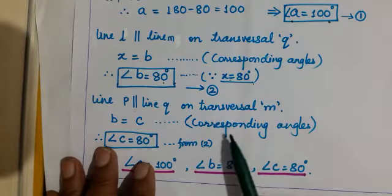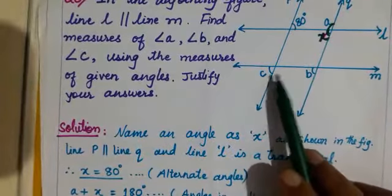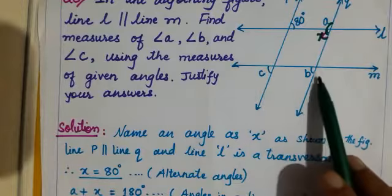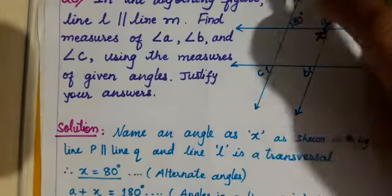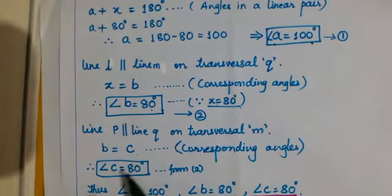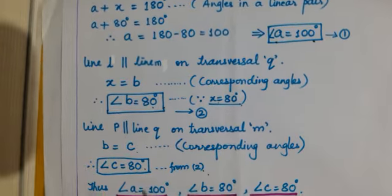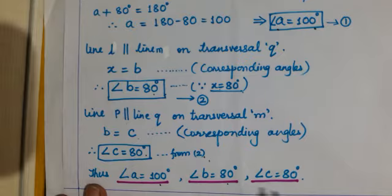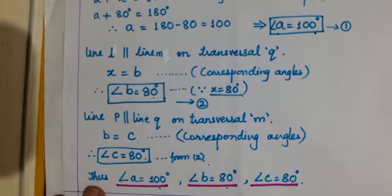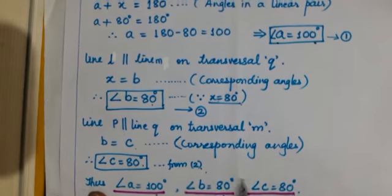Line p is parallel to line q on transversal m, and angles b and c are corresponding angles, so b equals c. Since b equals 80°, angle c also equals 80°. Thus angle a is 100°, angle b is 80°, and angle c is 80°. Students, practice these sums twice in your copy. Thank you.